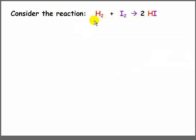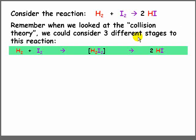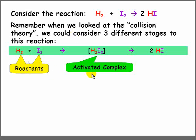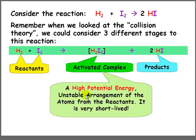Consider this reaction: H2 plus I2 gives 2HI. When we looked at collision theory, we could consider 3 different stages to this reaction: the reactants, the activated complex in between, and the products. Remember that the activated complex is a high potential energy, unstable arrangement of atoms from the reactants. It is very short lived. In this case, its formula is H2I2.